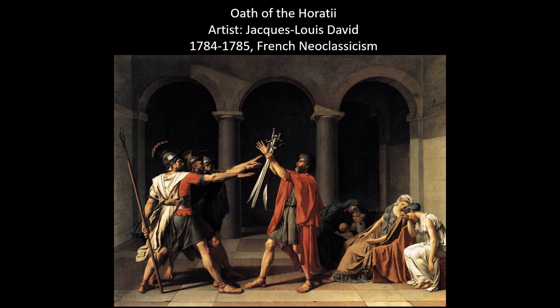What David has created here is an imaginative reinvention of the real-life 7th century BCE conflict between Rome and a rival territory, Alba. The decision was to solve their issues by sending three representatives each to fight it out. And for Rome, these representatives happened to be three brothers from the Horatius family — hence the name of the title.